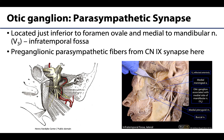Up to this point, we have been talking about preganglionic parasympathetic fibers. That means we need to get to a ganglion for these preganglionic fibers to synapse, and there just happens to be the correct one just inferior to the foramen ovale — very closely associated with the medial portion of V3. This ganglion is the otic ganglion.